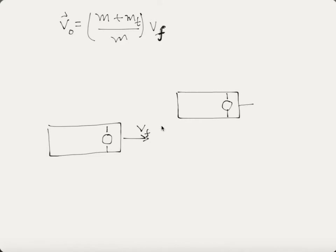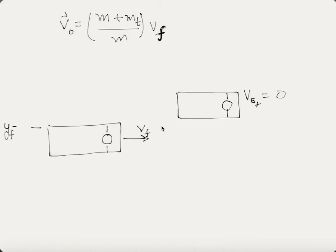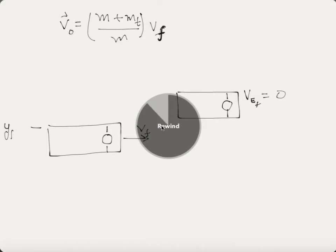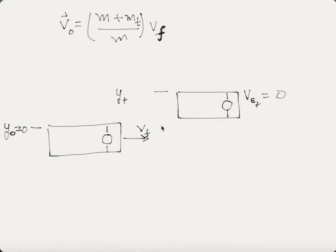Once the tube rises a certain height, its velocity goes to zero. We set y_initial equal to zero, and y_f is some height we need to calculate — we don't know what that equals yet. Since the pendulum rises a certain amount, we apply the conservation of energy, which comes from the work-energy theorem.